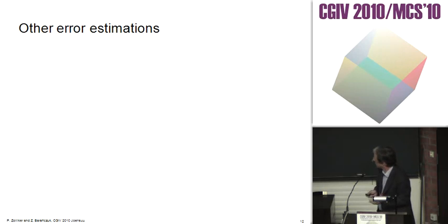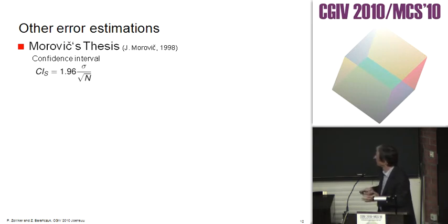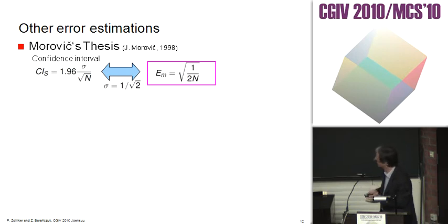Let's go back to other error estimates. That was actually the topic why we made this study, because it's contradictory. In Morowick's thesis, Morowick gives a confidence interval which, if we set the correct sigma, we get an estimation of the square root of 1 over 2 times larger. It's not quite clear what kind of interpretation to make in the thesis, but this formula was used in several later studies and cited by people doing certain tests.